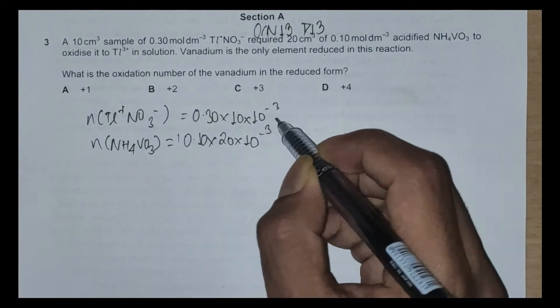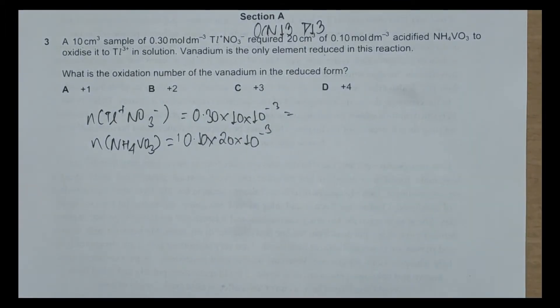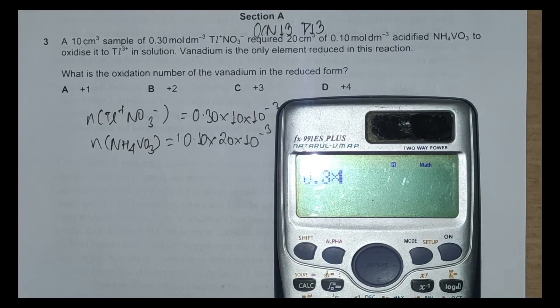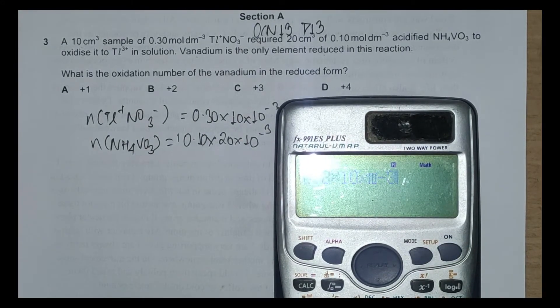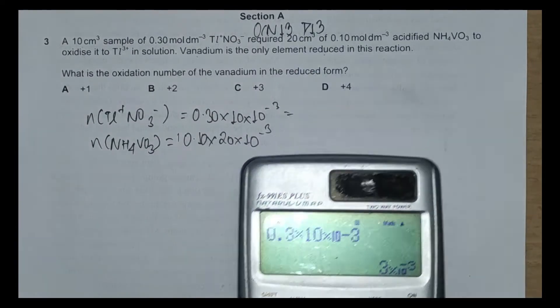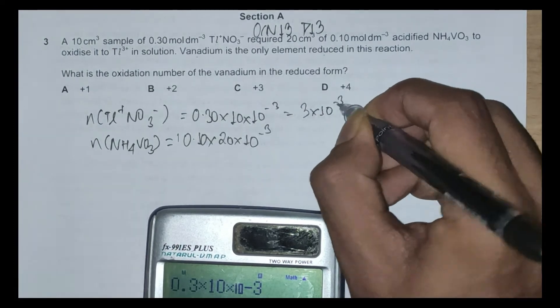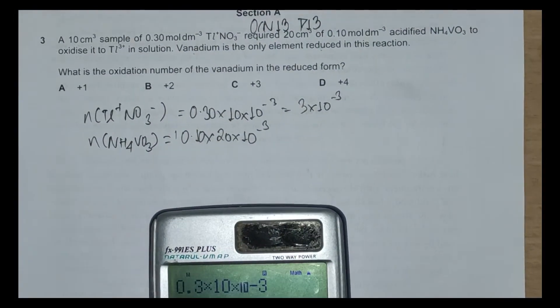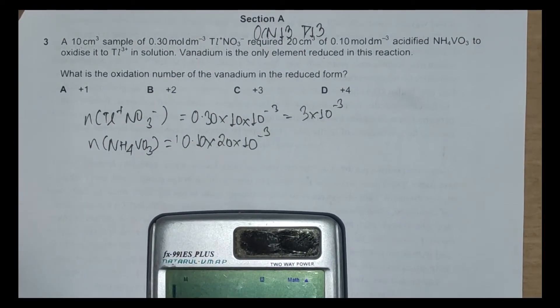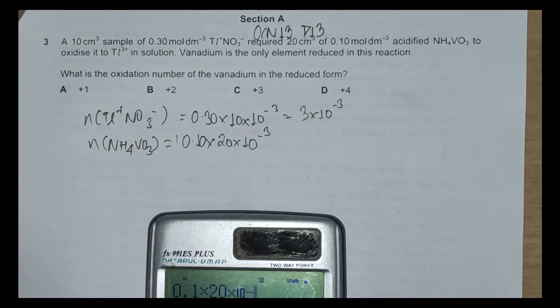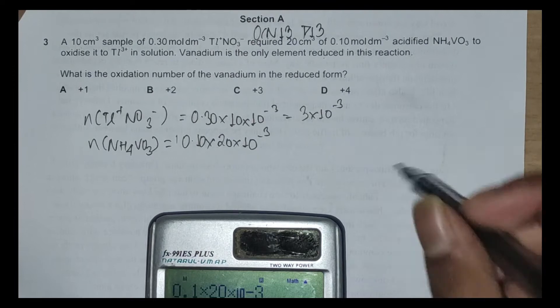Now if we calculate this, 0.3 times 10 times 10⁻³ is 3×10⁻³, and NH₄VO₃ is 0.1 times 20 times 10⁻³, which is 2×10⁻³.